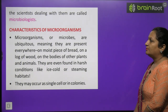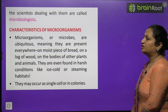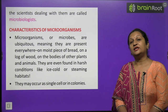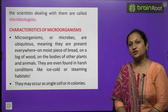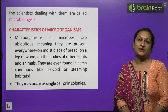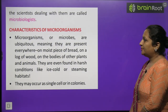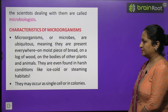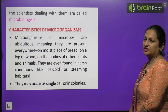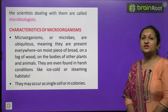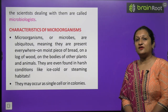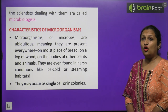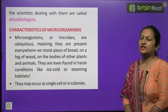Characteristics of microorganisms: Microorganisms or microbes are ubiquitous, that means they are present everywhere — in air, water, soil — har jagha. Even our body has microorganisms present on it. They are present on moist pieces of bread, on logs of wood, on bodies of other plants and animals. They are even found in harsh conditions like ice-cold or steaming hot habitats, and even in hot water springs certain types of bacteria are found. They may occur as single cells or in colonies.